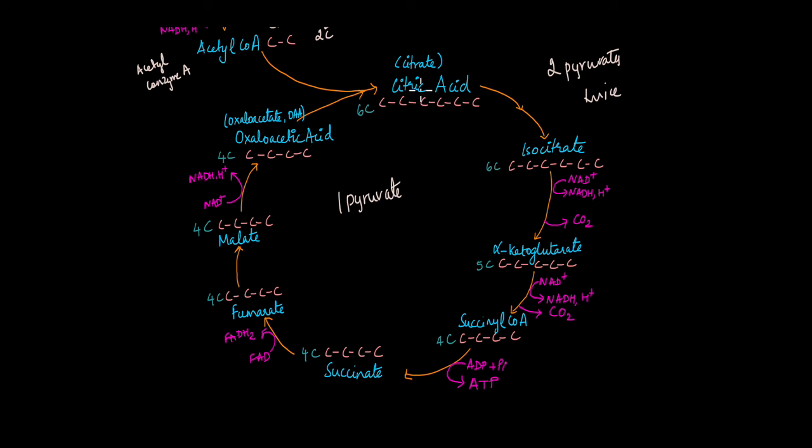Now why is the production of NADH and FADH2, which is another electron carrier, important? We'll get to that in just a while. The steps of the citric acid cycle are important but I am not going to go into the detail of the steps.